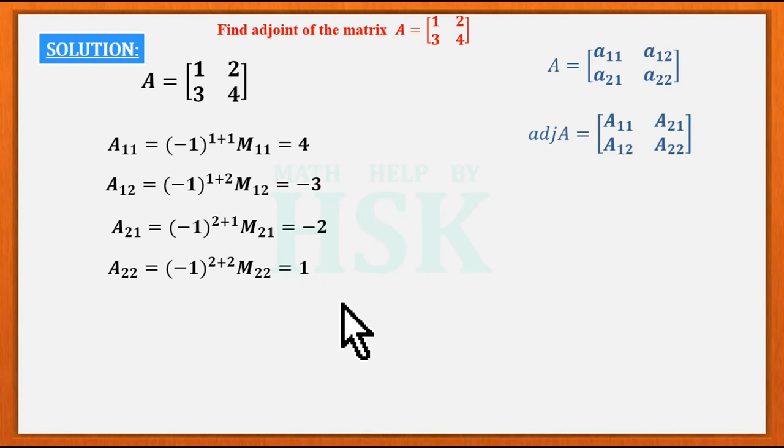So adjoint of A would be given by [4, -3; -2, 1]. These are the cofactors of the first row, so I have written them in column, and these are for the second row and I have written them in column to obtain the adjoint of the matrix A. So this is how we calculate the adjoint of the matrix.